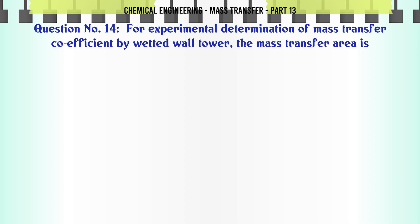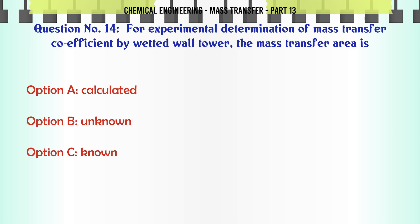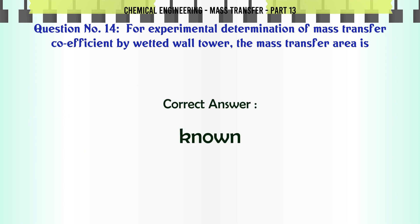For experimental determination of mass transfer coefficient by wetted wall tower, the mass transfer area is: A. Calculated. B. Unknown. C. Known. D. Not required. The correct answer is: Known.